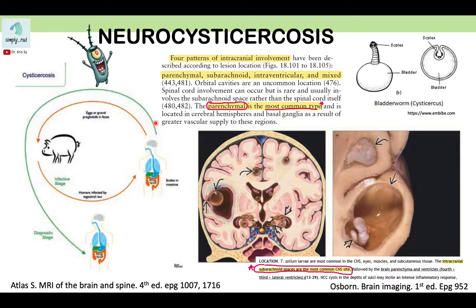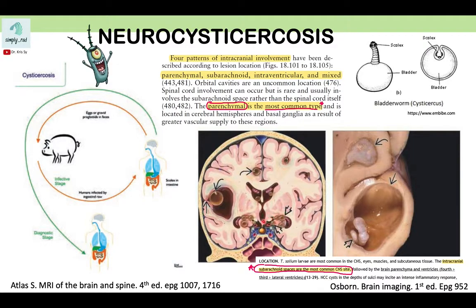Neurocysticercosis is an infection in the brain caused by ingestion of the eggs of Taenia solium. These eggs hatch in the small intestine and the larvae travel through the bloodstream. From the bloodstream, the larvae sometimes lodge in the subarachnoid spaces, and some will enter the small arteries like the lenticulostriate arteries and lodge in the basal ganglia.